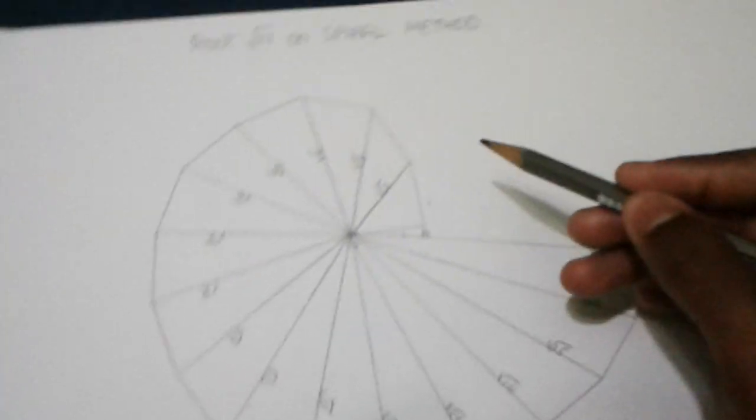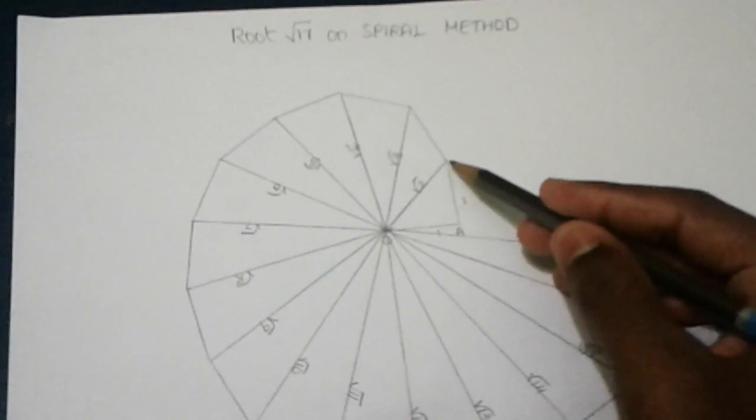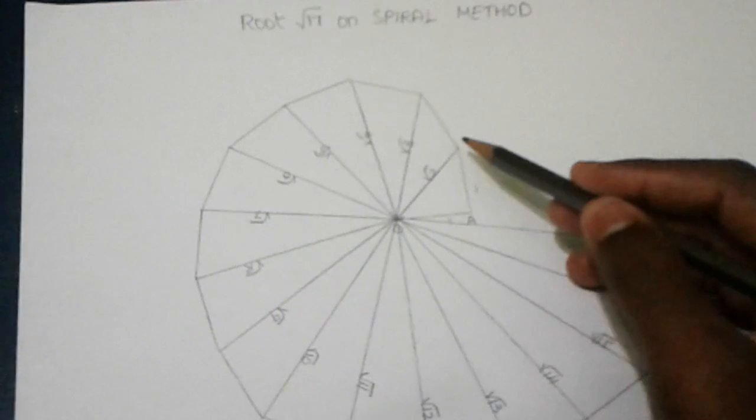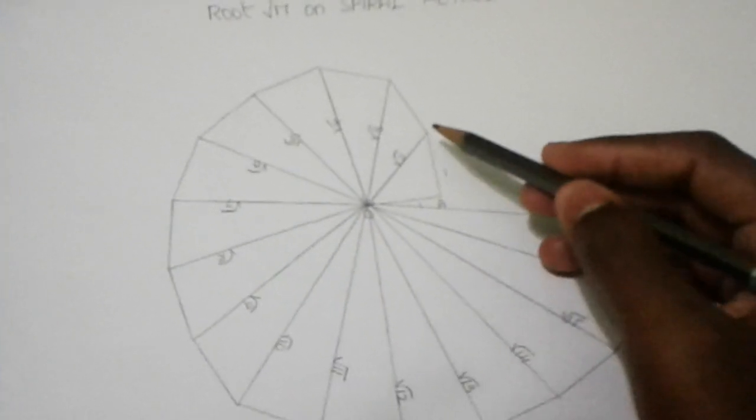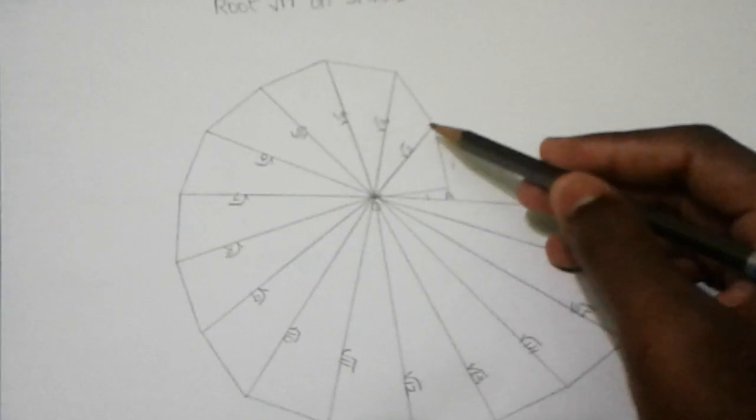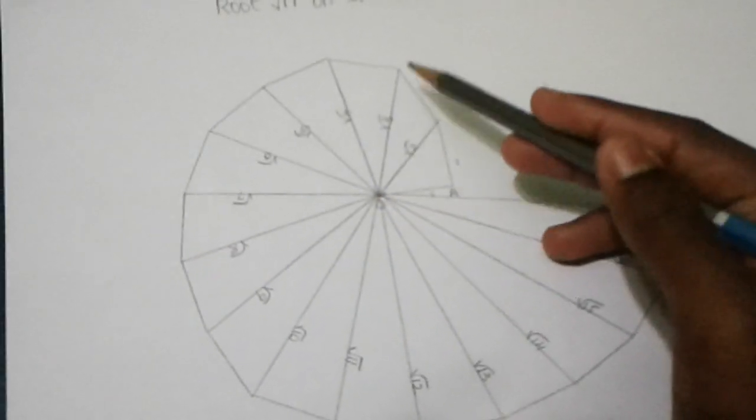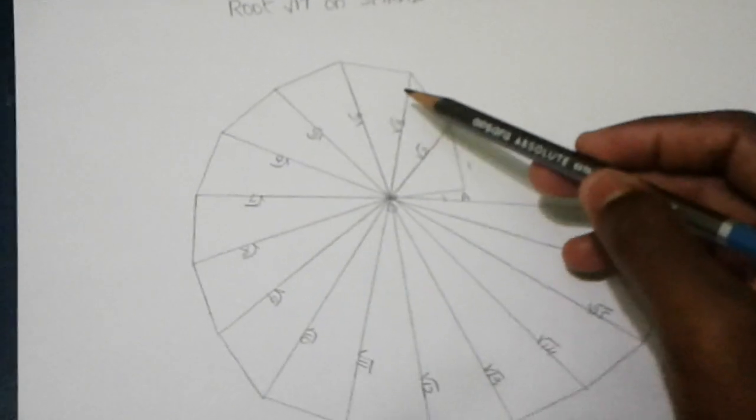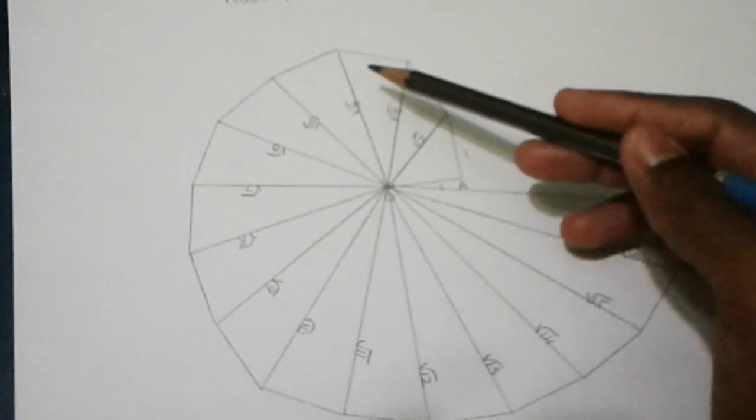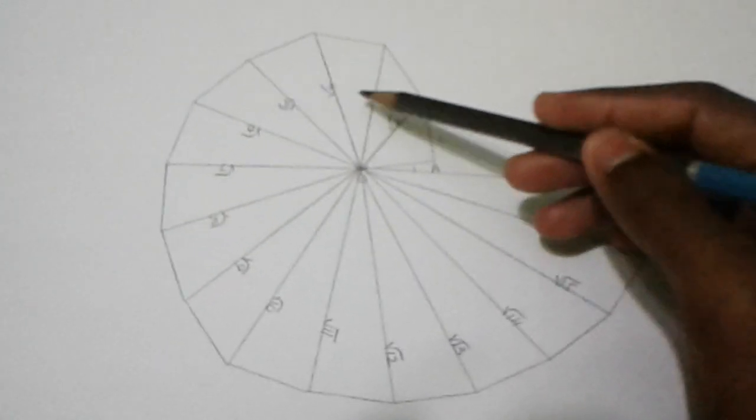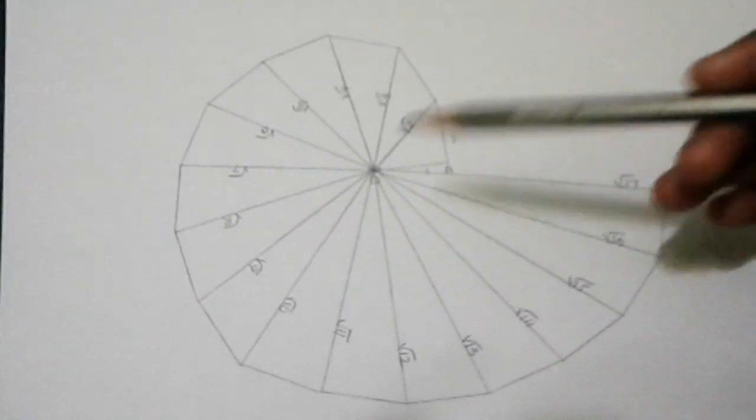We should again draw one unit and join O to this line. Again, we should draw another one unit and join to this. Like this, we should continue up to root 17. As we continue forming like this, we get more of the spiral and can create a beautiful pattern.